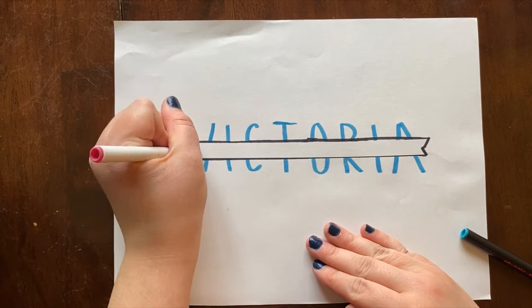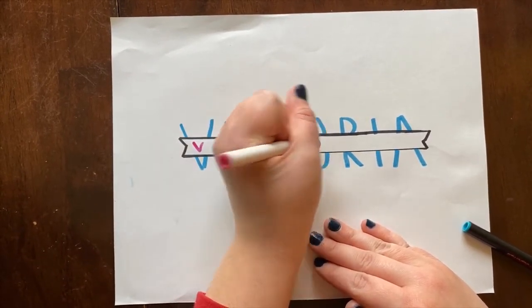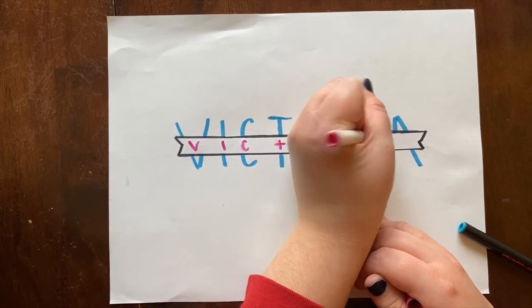So after I have connected the lines, I'm grabbing a new color from my pile of markers and I'm going to rewrite my name inside of the new little box that we've created.